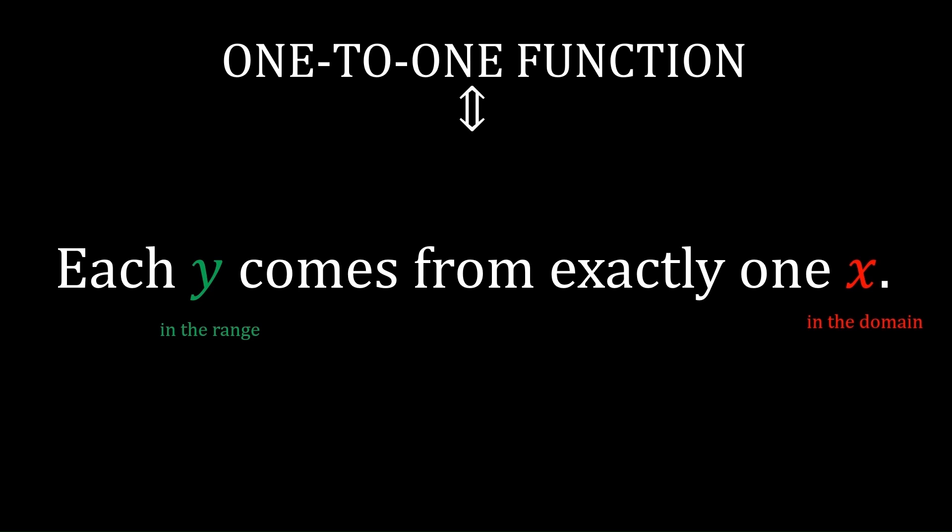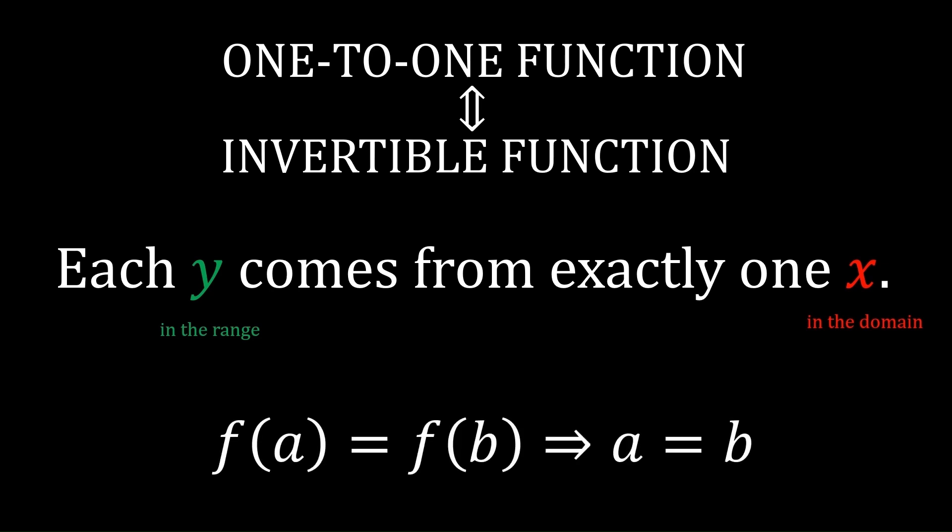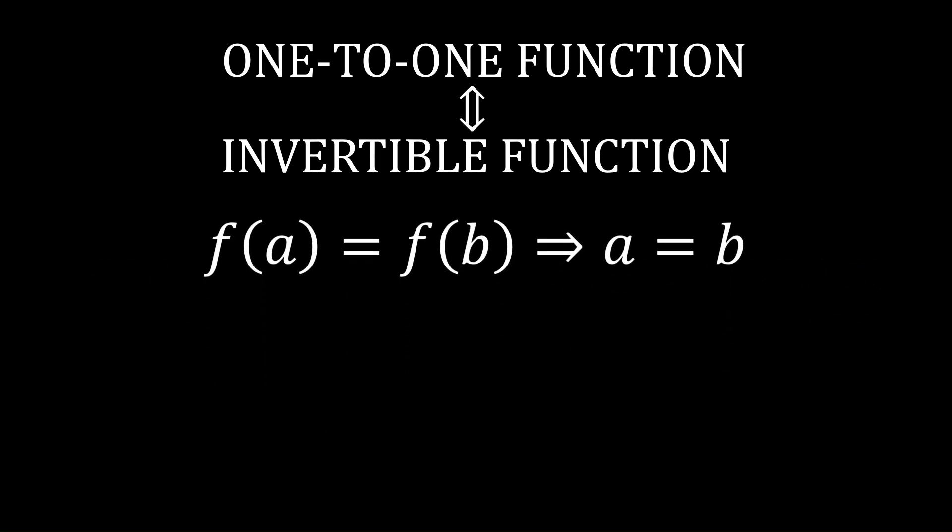For the purposes of this video, a one-to-one function is always going to be invertible. Basically, every output comes from exactly one input. So you can go from an output to the input which caused it, without any ambiguity. For example, e to the x. If you have e to the a equals e to the b, which means these outputs are the same, it actually means the inputs are the same as well. a has to be equal to b. But if you have a squared equals b squared, it doesn't actually mean that a equals b, because a could be minus b as well. So x squared is not an invertible function, but e to the x is invertible.